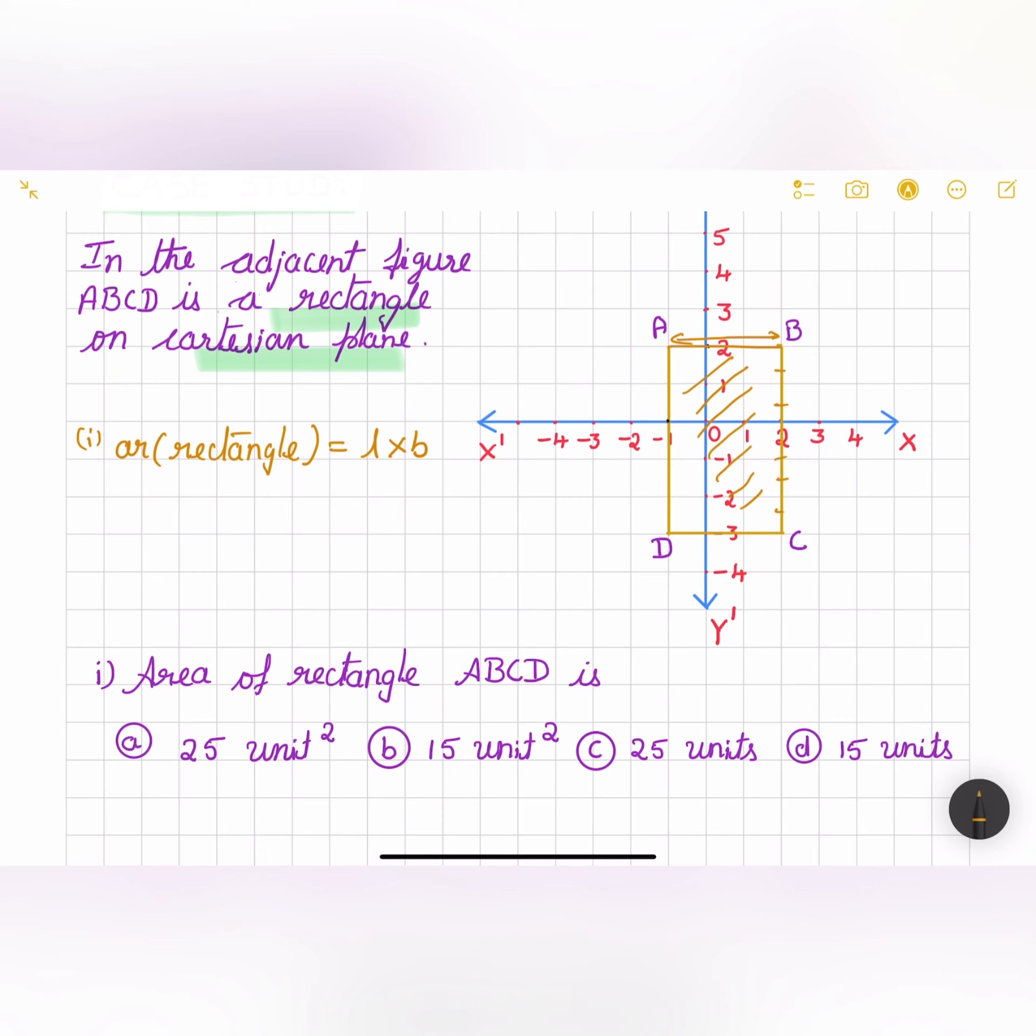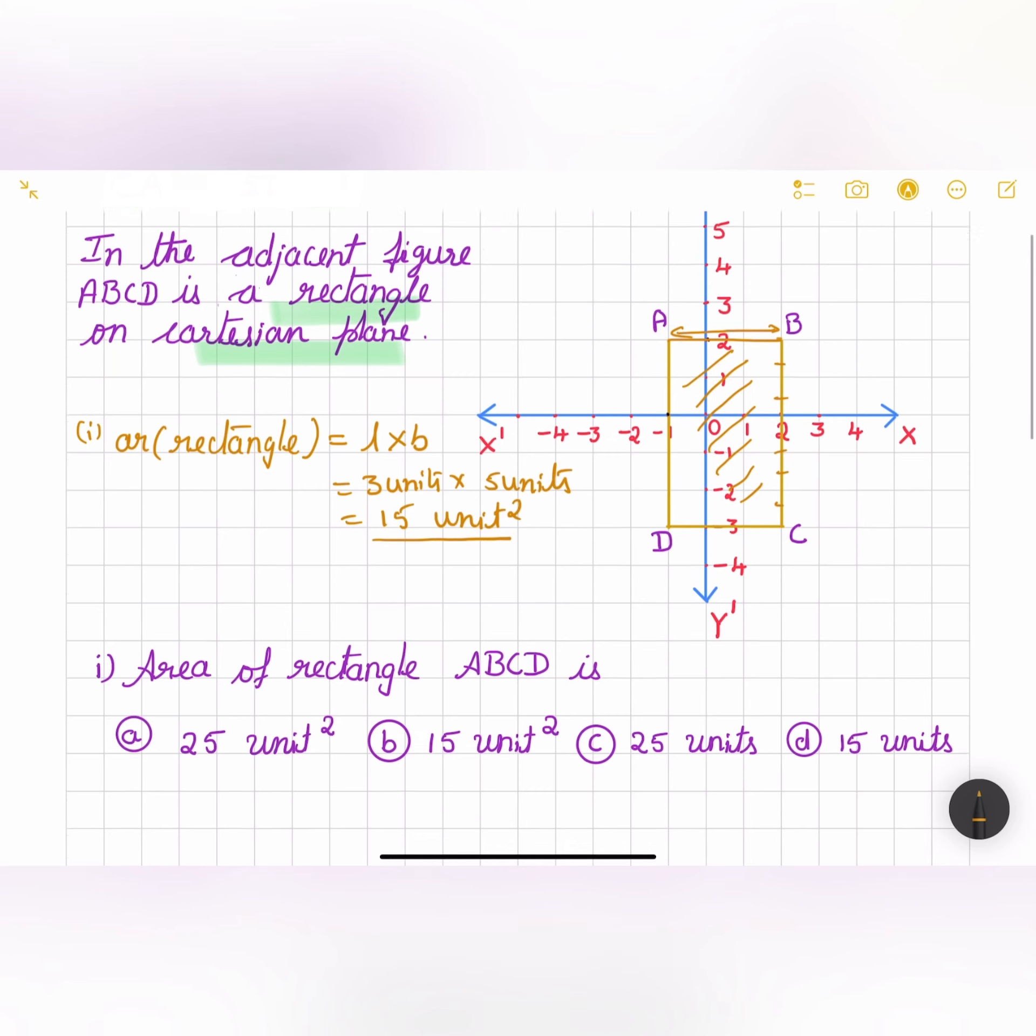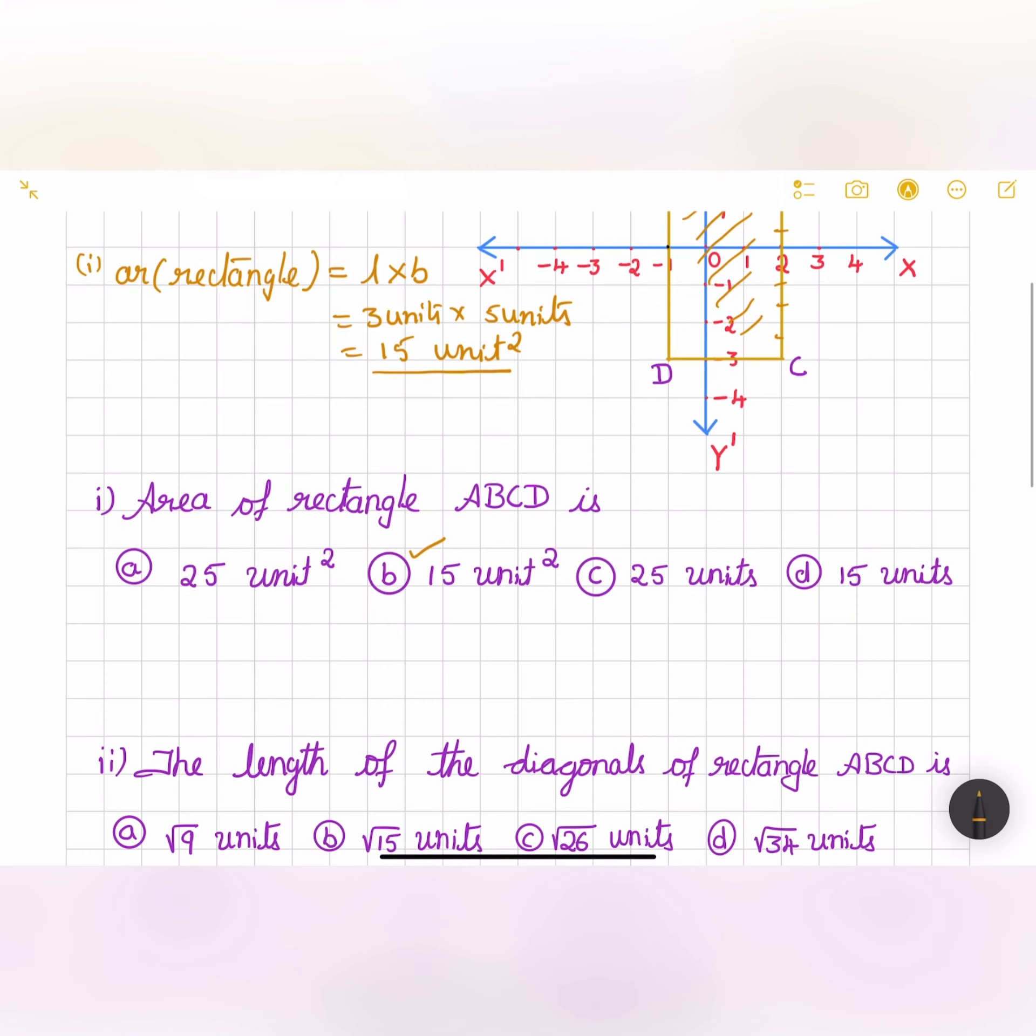One, two, three, four, five. So it is three units into five units. That is equal to 15 unit square or square units. And the correct option is option B. The area of rectangle is 15 units.